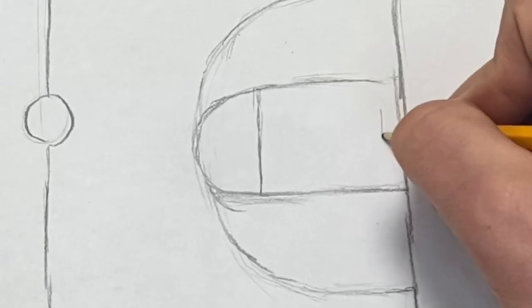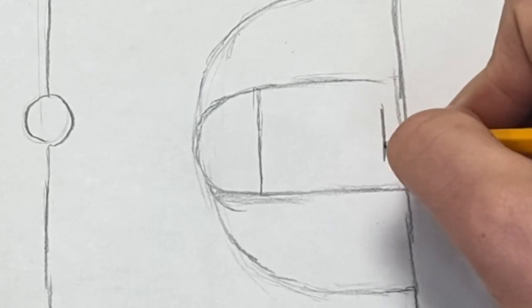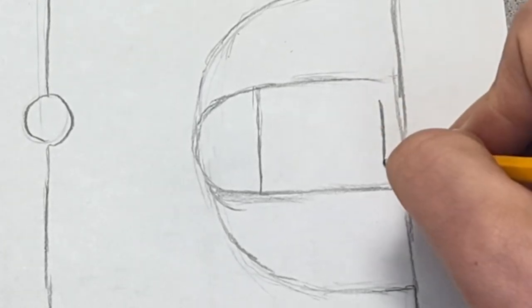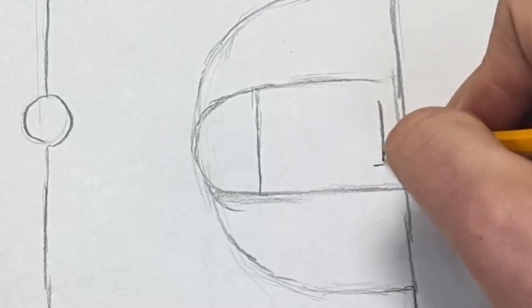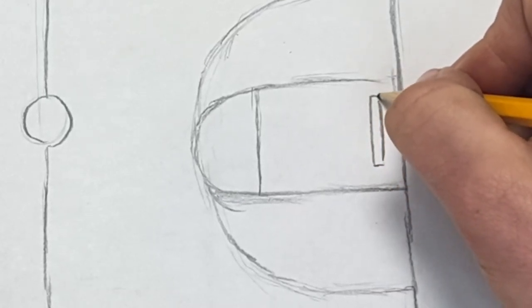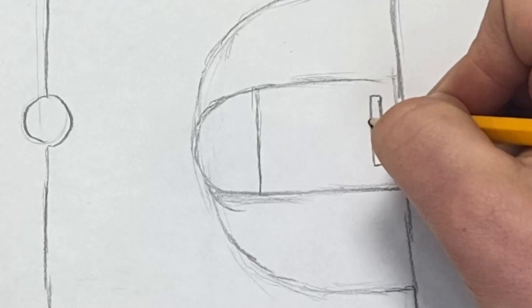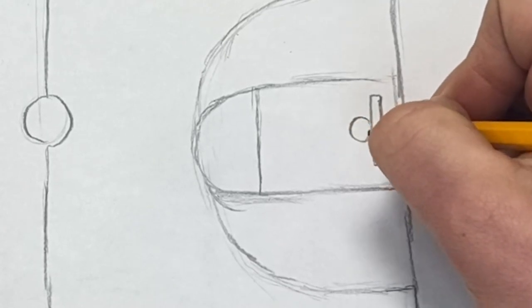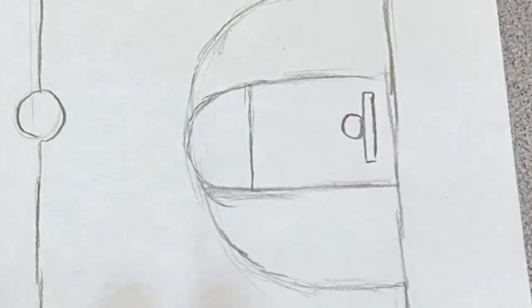And then we've got to do our basketball hoop, of course. I'm just going to do a straight line with a really skinny kind of rectangle. And then a circle in front of that. Nice, I like that.